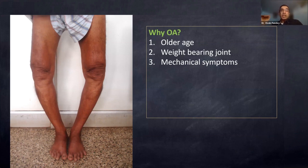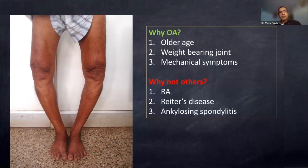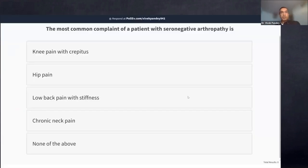Weight-bearing joints are more commonly involved in OA — knee, hip, and ankle are most common. Shoulder and upper limb joints are relatively affected 20 to 30 years later than lower limb joints. Symptoms are usually mechanical. The question is: if this is right, why is this not rheumatoid? Why not Reiter's? Why not ankylosing spondylitis?